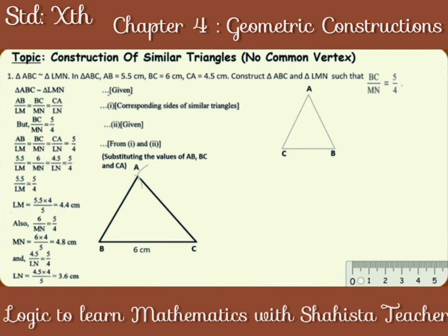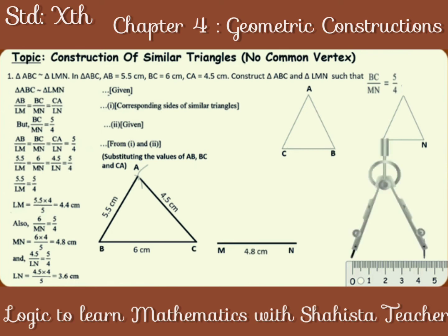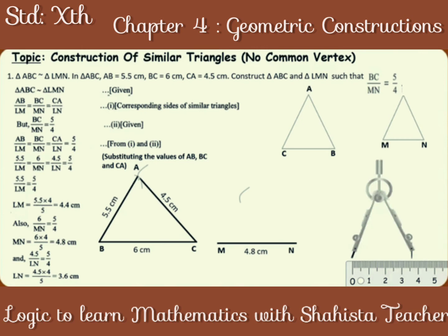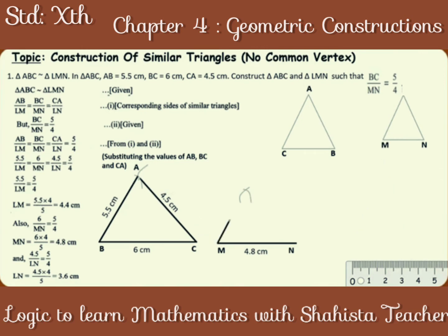Draw a rough figure of triangle LMN. Construct side MN of measurement 4.8 cm. On the compass, take measurement 4.4 cm from point N and construct an arc. Similarly, take a measurement of 3.6 cm, keep the pointer at N and construct an arc. Name the intersection point as L. Thus, the similar triangles can be constructed.